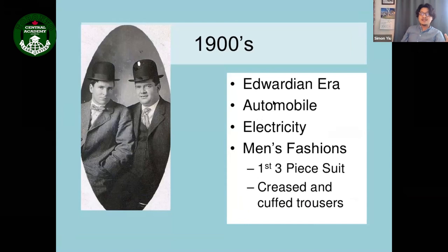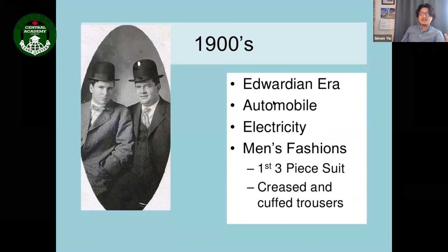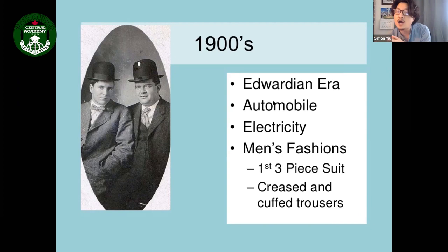In the 1900s, it was the Edwardian era — after the Victorian era, since Edward was Queen Victoria's son. At that time, automobiles first appeared and so did electricity. For men's fashion, we had the three-piece suit and crease-and-cuff trousers.